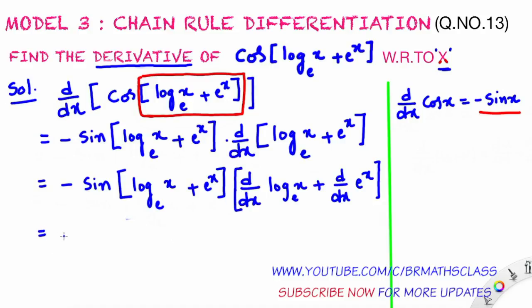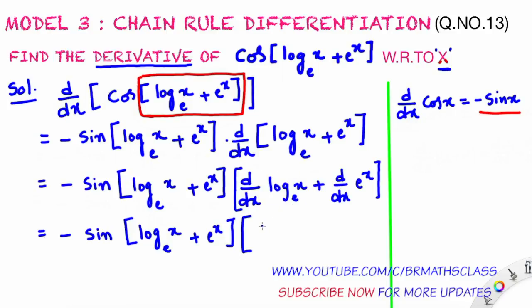That equals minus sin of log x base e plus e power x, into: the derivative of log x base e — do we have a formula for that? Yes. The derivative of log x base e is 1 by x. Plus the derivative of e power x — is there a formula? Yes. The derivative of e power x is e power x.